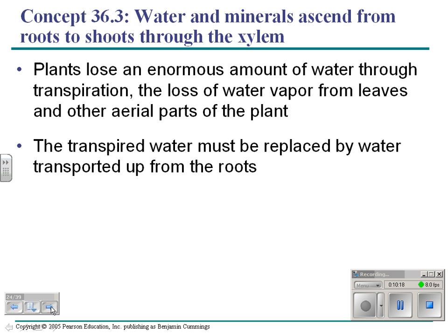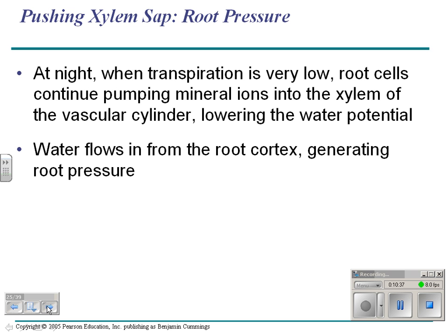Water and minerals ascend from roots to shoots through the xylem. Plants lose water through their leaves, called transpiration, and that water has to be transported up from the roots to be replaced. At night, when transpiration is really low, roots continue pumping mineral ions using energy into the xylem. If you pump mineral ions in, you lower water potential, so water comes into the root — we call that root pressure.